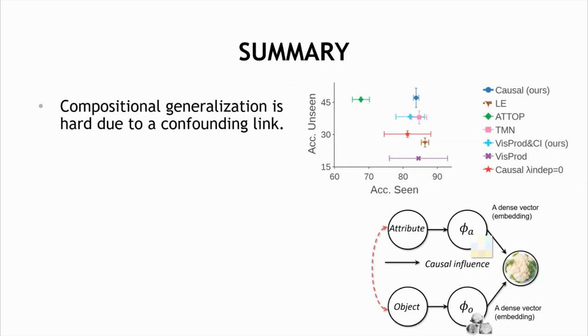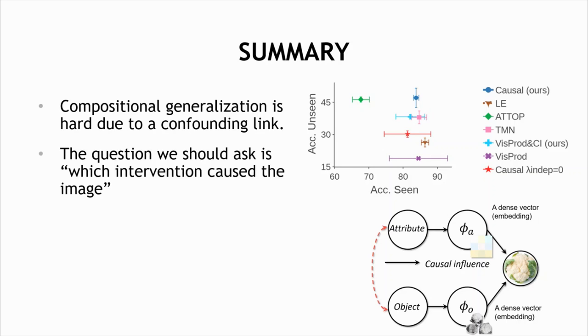So, to sum it up, compositional generalization is hard because of the confounding relations between the factors. A causal model formalizes this confounding relation and suggests that we should ask, which intervention caused the observed image? We presented a model that is stable across environments and achieves better recognition of unseen compositions.